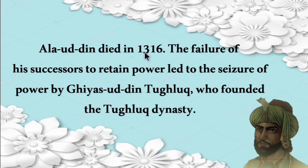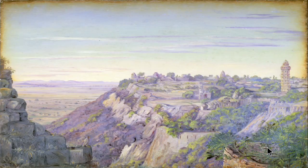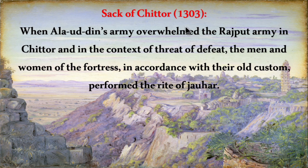Ala Uddin died in 1316 AD. The failure of his successors to retain power led to the seizure of power by Giyas Uddin Tughlaq, who founded the Tughlaq dynasty. Now let's see about the Sack of Chittor in 1303 AD.